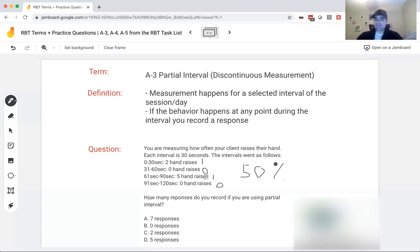Notice the total number didn't matter. Five and two didn't matter because we're looking at interval data. We just want to know, did it happen during the interval or did it not? So in this case, partial interval, our answer would be we record two total responses. It happened two out of the four intervals or 50% of the time.